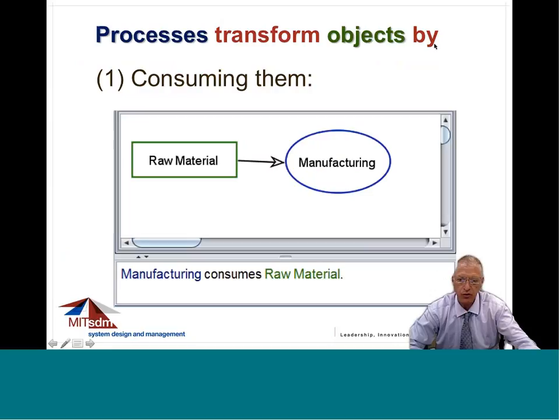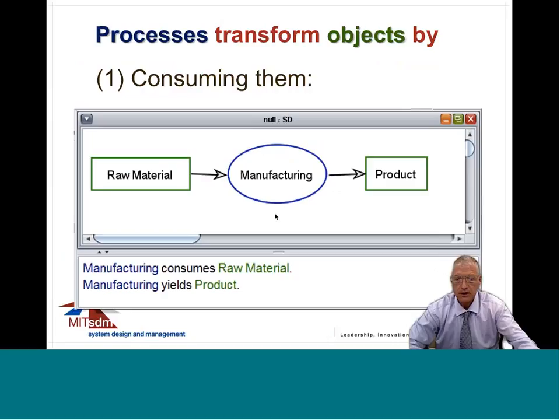Processes transform objects by consuming them. Here is an example: the process 'manufacturing' consumes raw material as it operates. The sentence at the bottom is automatically generated by software called OPCAT, which anyone can download for free.